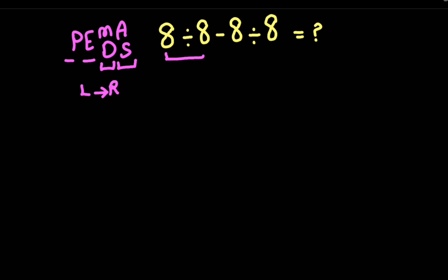Now we have one division: 8 divided by 8 gives us 1. And between division and subtraction, we have to solve this division, and 8 divided by 8 gives us 1. Now we have 1 minus 1, that gives us 0.